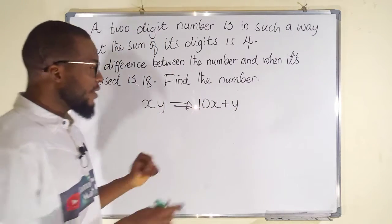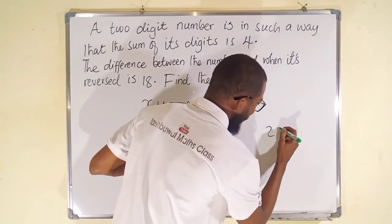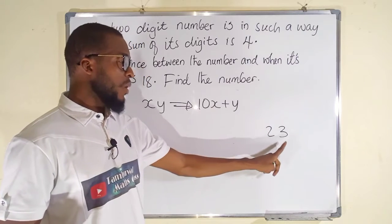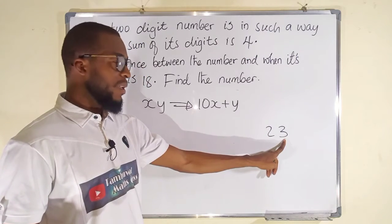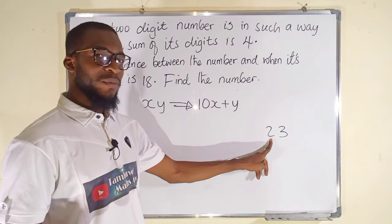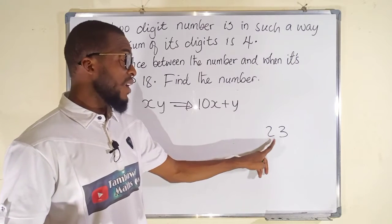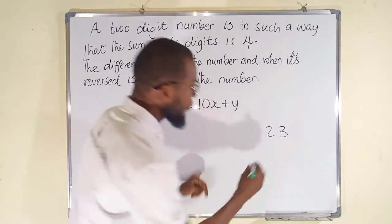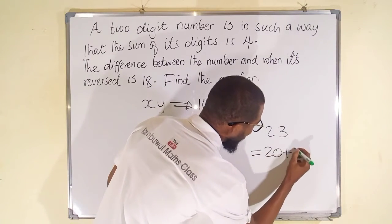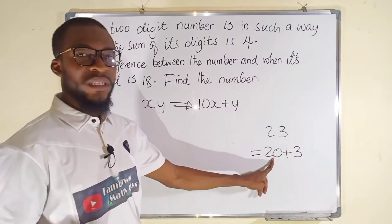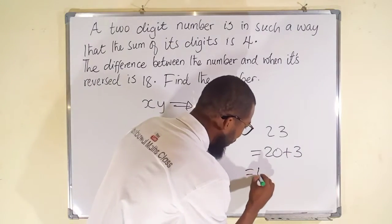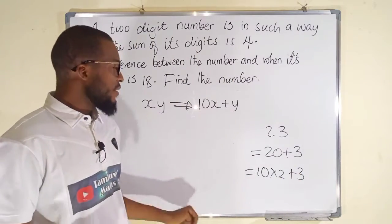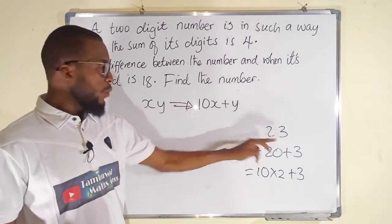Let the number be 23 just for example. Going back to place value, we know that 3 is at unit place and 2 is at tens place, and 2 is 10 times as significant as 3. If we should consider place value, 23 can be written as 20 plus 3, and 20 can also be written as 10 multiplied by 2, then we have plus 3.